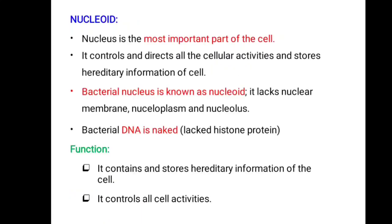Next is the nucleoid. The nucleus is the most important part of the cell — it controls and directs all cellular activities and stores hereditary information. The bacterial nucleus is known as the nucleoid. It lacks nuclear membranes, nucleoplasm, and a true nucleus. Bacterial DNA is naked and lacks histone proteins. The function of the nucleoid is to contain and store hereditary information and to control cell activities.